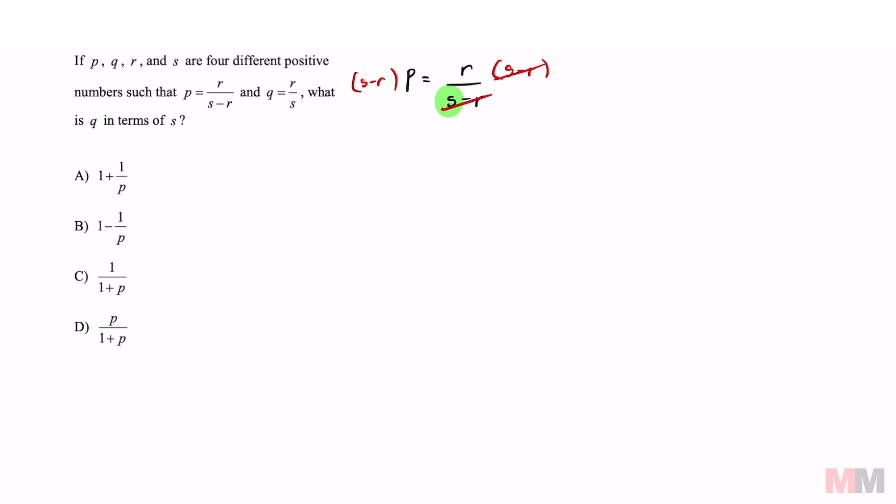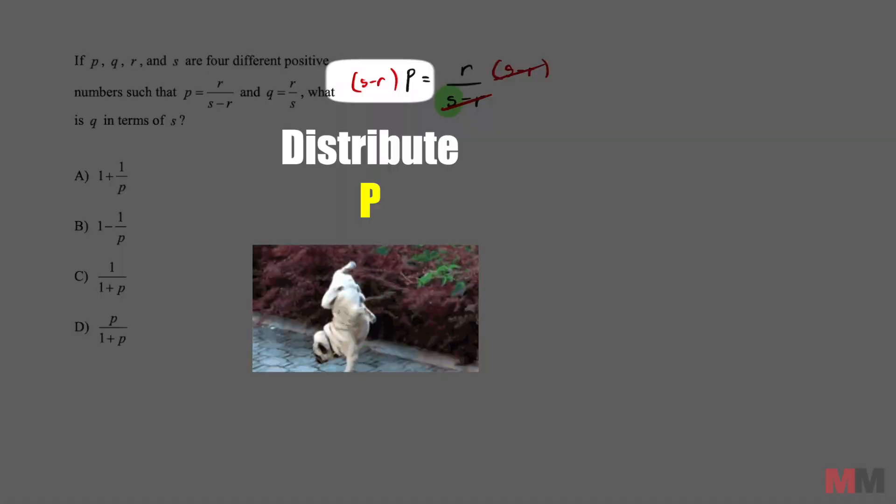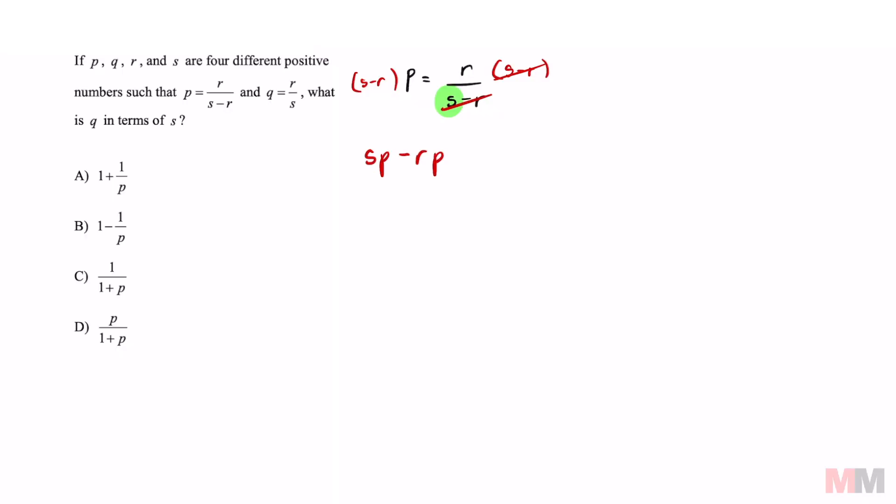To do that, first step is to multiply both sides by S minus R. That's going to cancel out that denominator and we might as well distribute this part right here. So that's going to get me SP minus RP equals R. We're trying to get S by itself. So let's add RP to both sides. SP equals R plus RP and then divide by P. S is going to equal R plus RP over P.